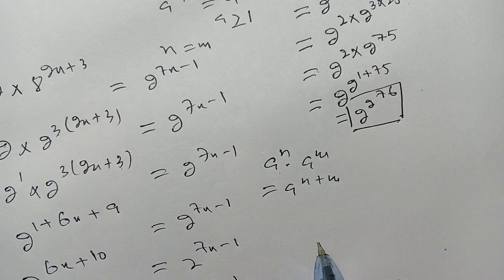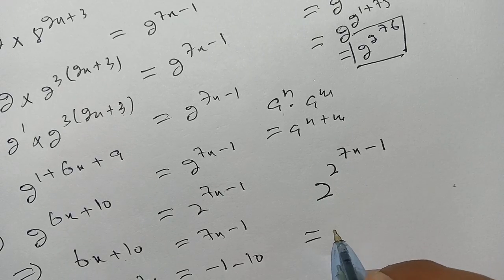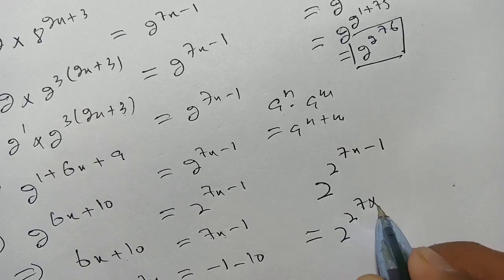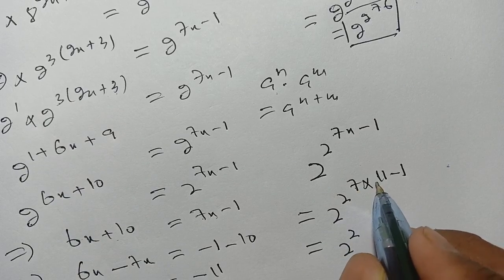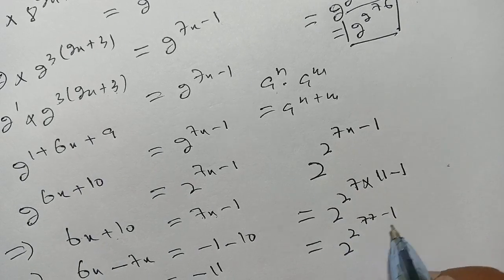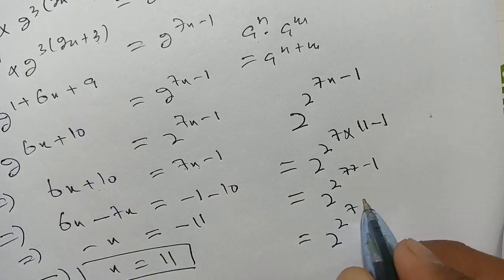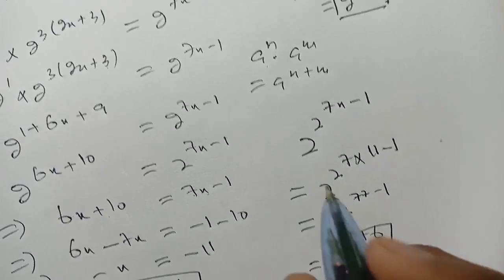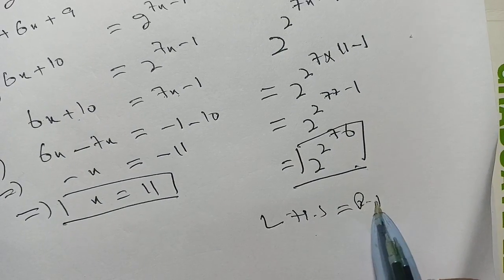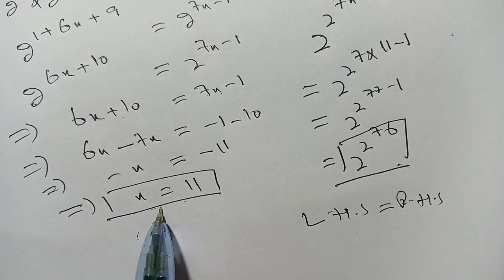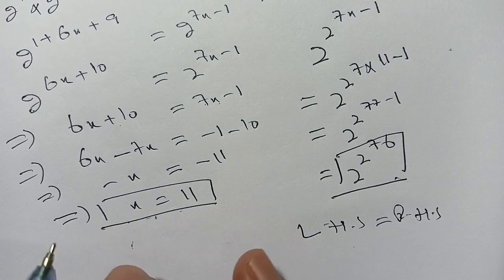Now we take the right hand side: 2^(2^(7×11-1)) = 2^(2^(77-1)) = 2^(2^76). You can see that it equals our left hand side, so left hand side equals right hand side. Thus x = 11 is our solution. If you are new here, subscribe to our channel for more interesting videos. See you in the next video, till then bye.